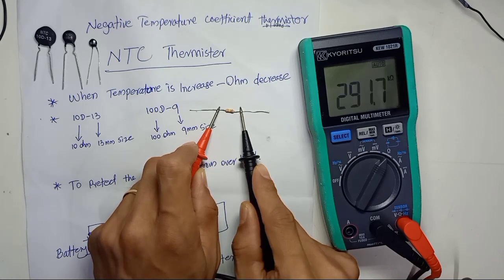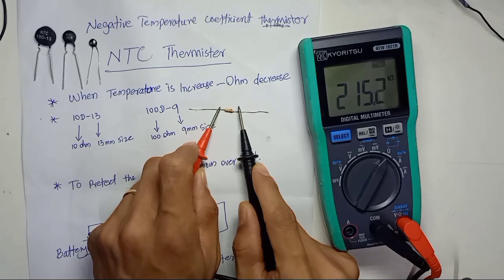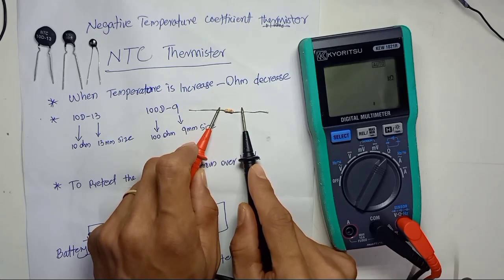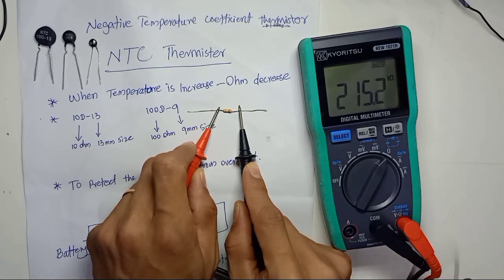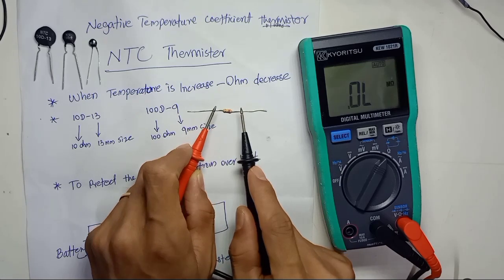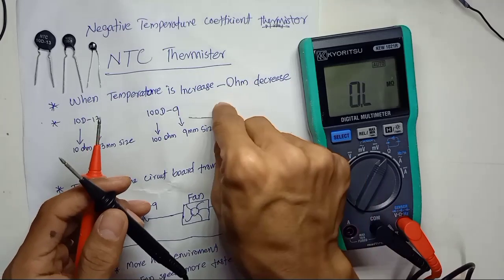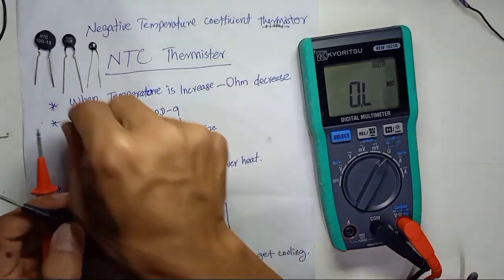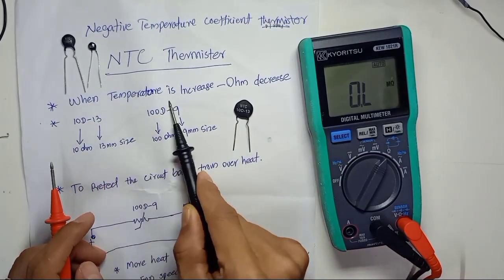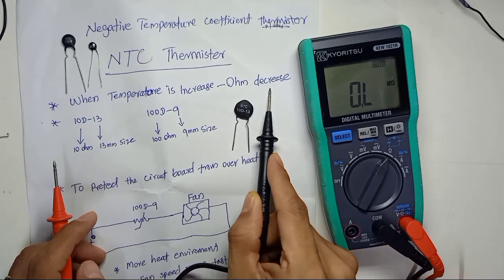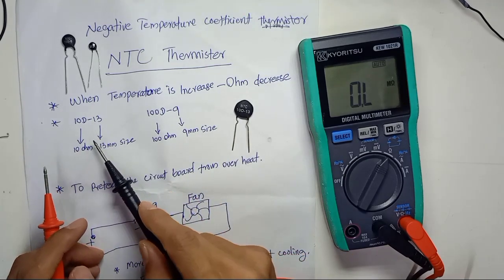The difference between an NTC thermistor and a resistor is that a resistor has a fixed value — a 220K resistor will always be 220K and that value will not change. If the value drifts by more than 5%, say it drops to 150K, the resistor is already out of spec and cannot be used.